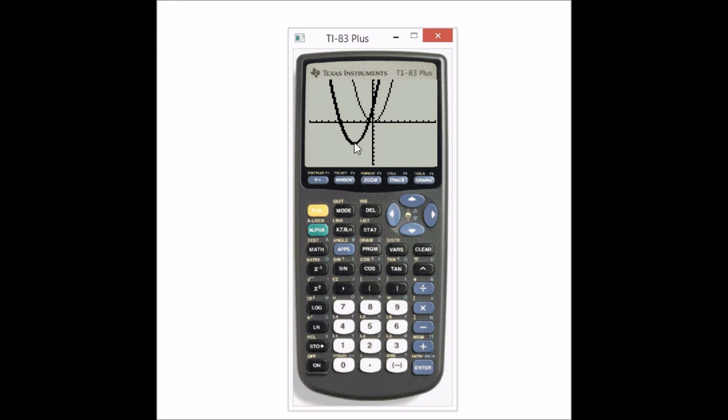And if I wanted this parabola to face down instead of facing up, all I would need to do is put a negative in the front. So the negative that's in the front of your function tells you that it's going to be facing down instead of facing up.